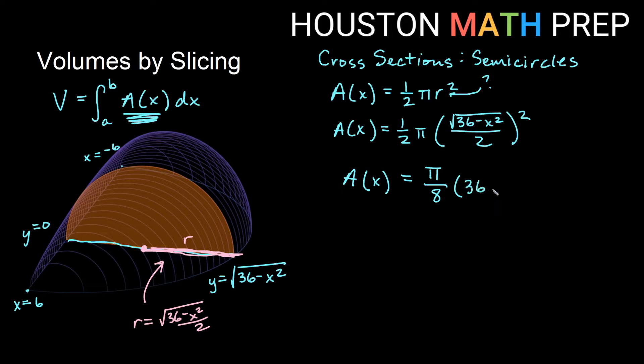So our volume for this object, with all these semi-circular slices, would be the integral from negative 6 to 6, pi over 8, 36 minus x squared dx. And this would just be power rules, you could bump the pi over 8 out. We're not going to work out the full integral in this one, we're just going to set it up and give you the idea for slicing here.